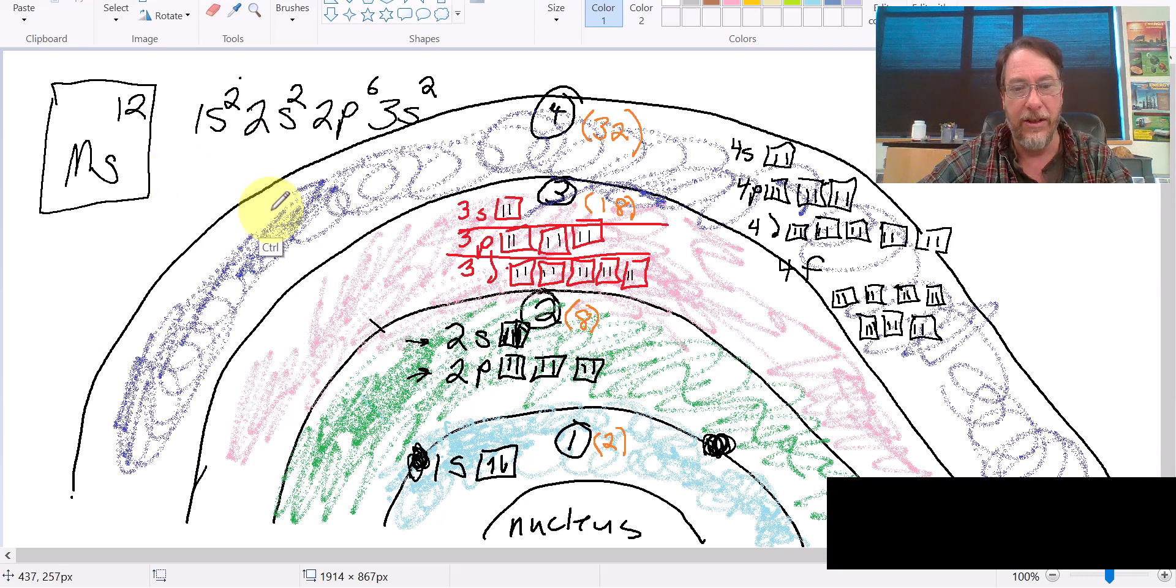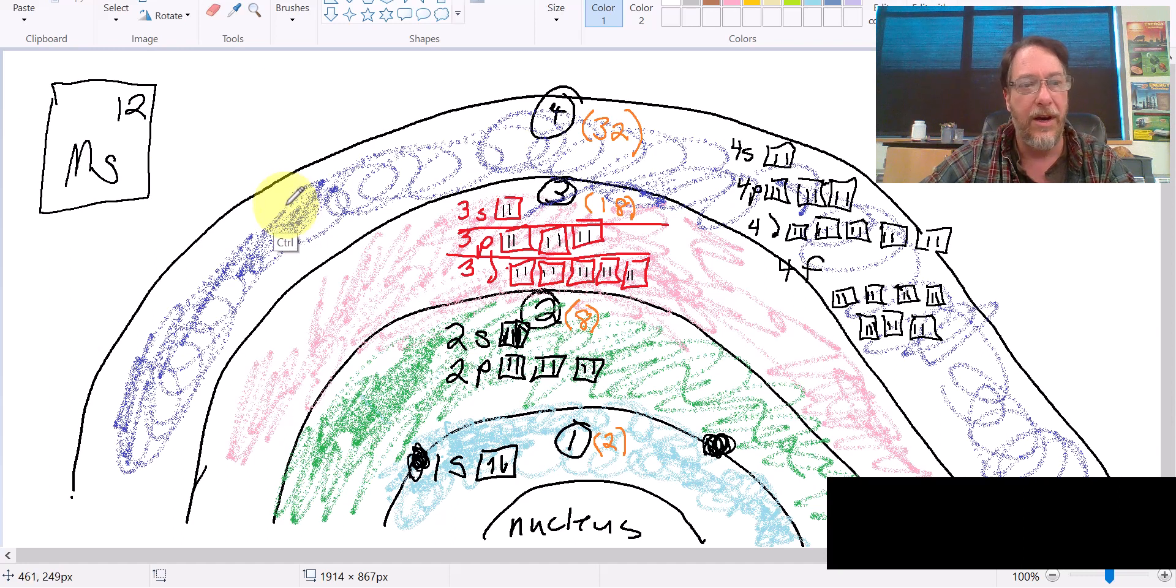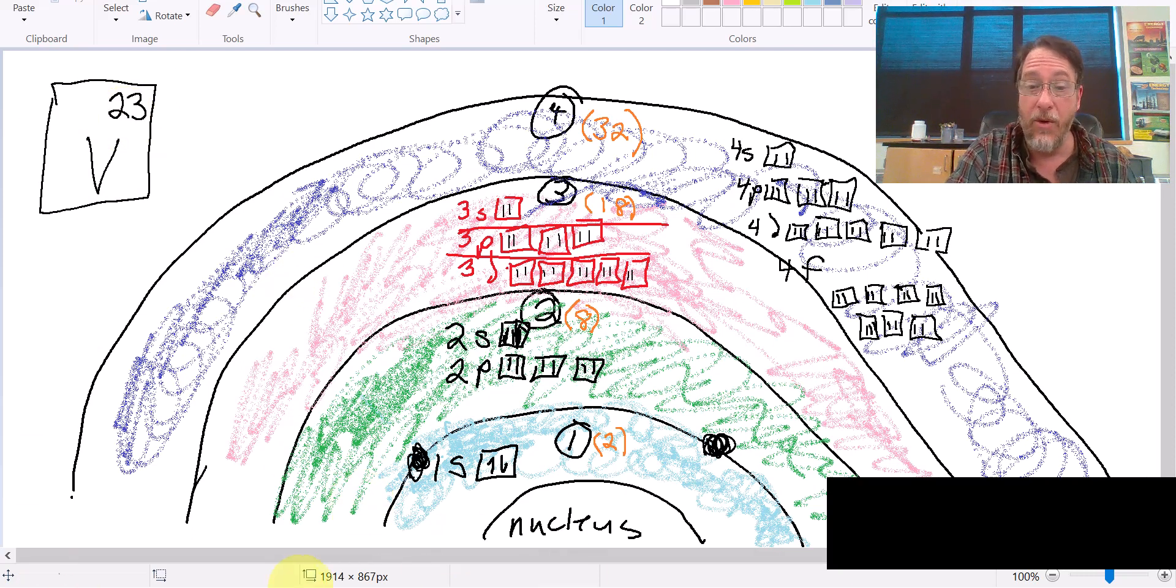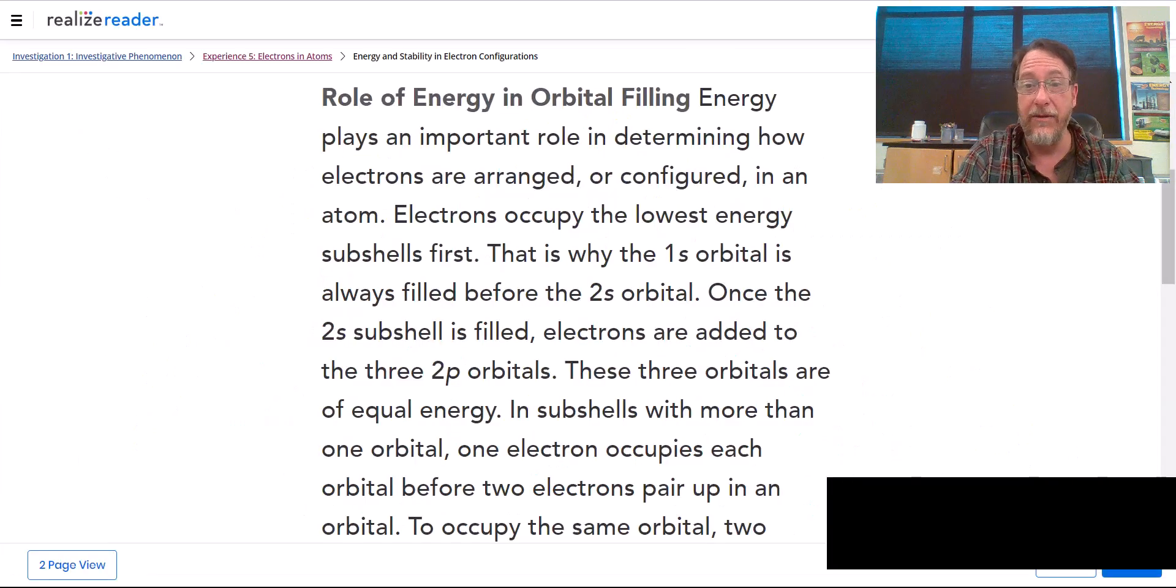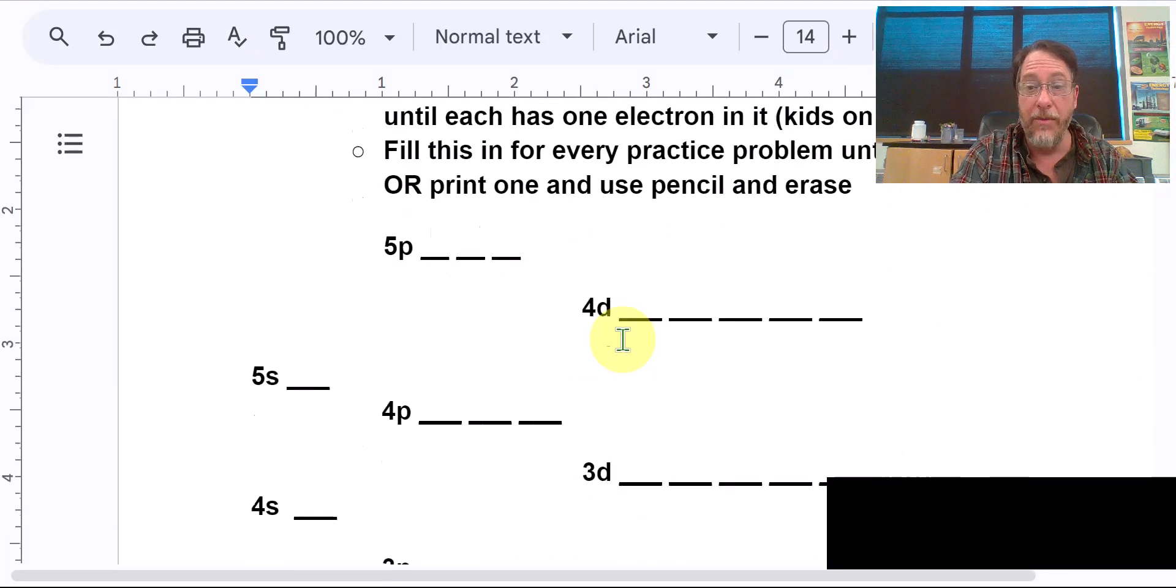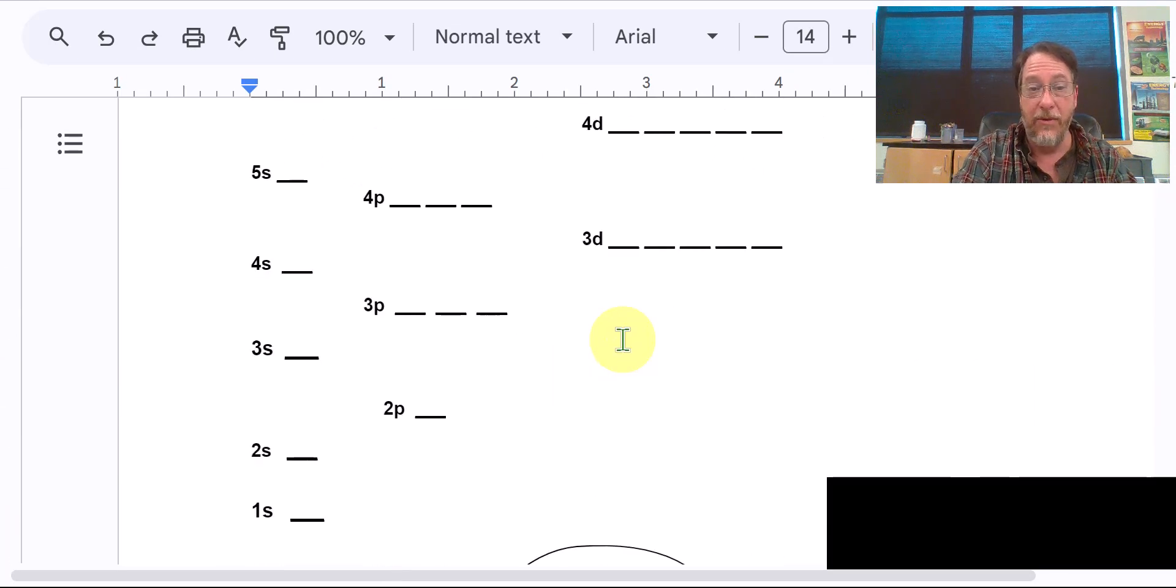Let's undo this real quick, and I think I'm going to do a different element. Let's do something a little bigger. How about vanadium, number 23? So we'll do V23.